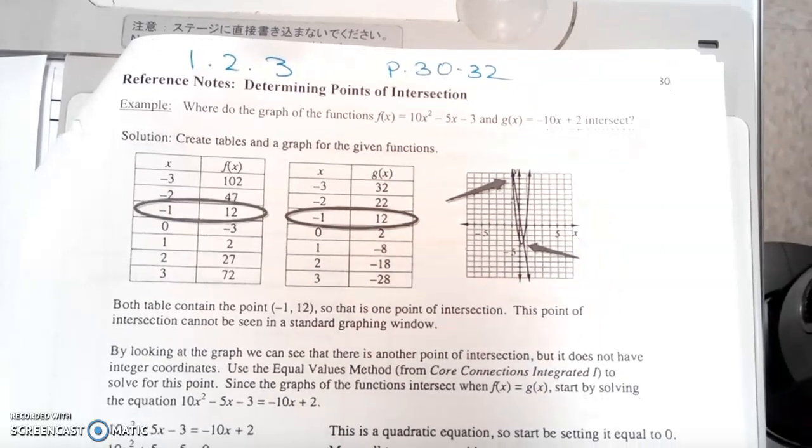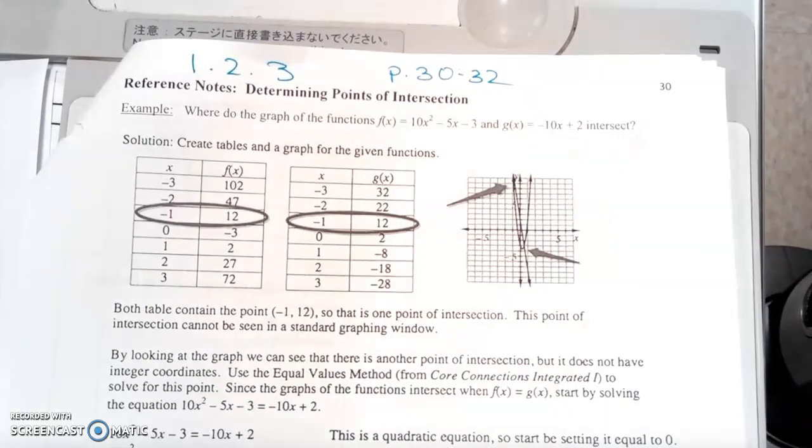Here's what it says. It says both tables contain the point negative 1, 12, so that is one point of intersection. This point of intersection cannot be seen in a standard graphing window.